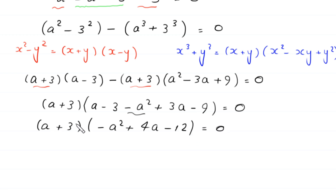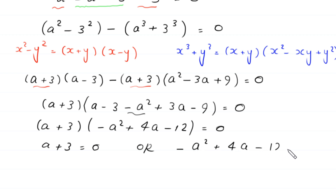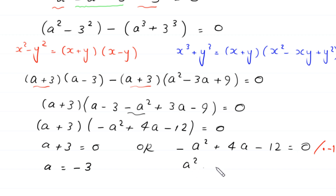From here, either (a+3) = 0, giving a = -3, or (-a² + 4a - 12) = 0. Multiplying the second equation by -1 gives a² - 4a + 12 = 0.